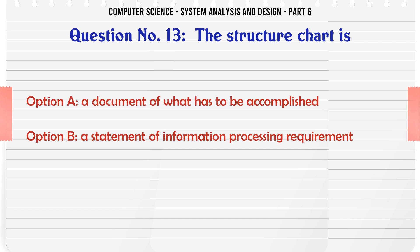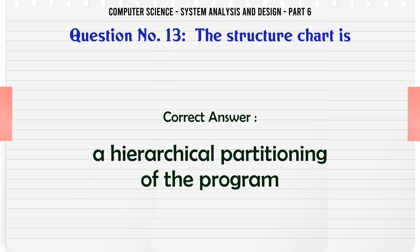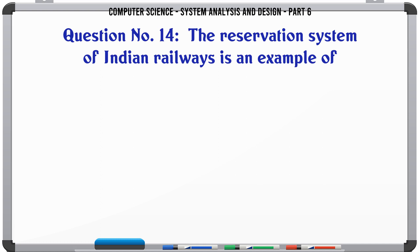The structure chart is: A. A document of what has to be accomplished, B. A statement of information processing requirement, C. A hierarchical partitioning of the program, D. All of the above. The correct answer is: A hierarchical partitioning of the program.